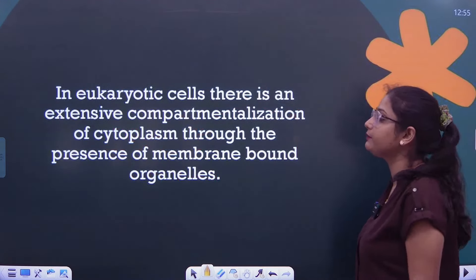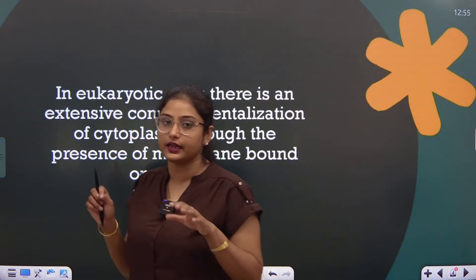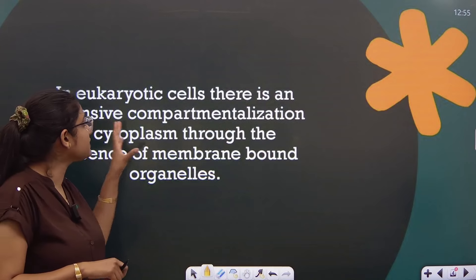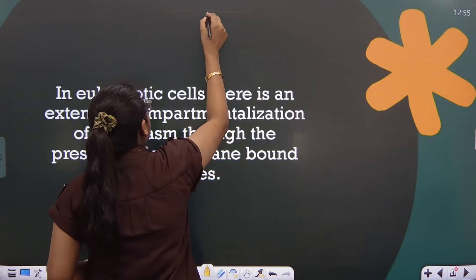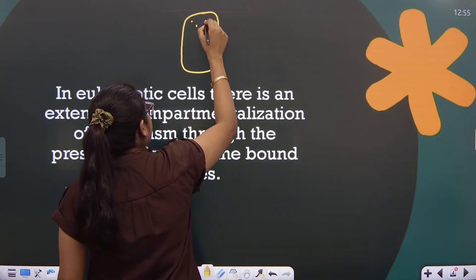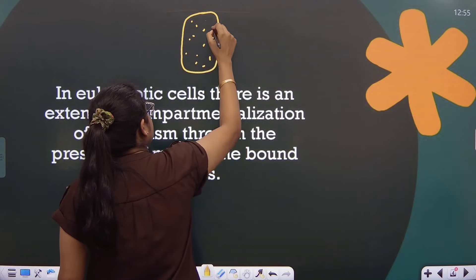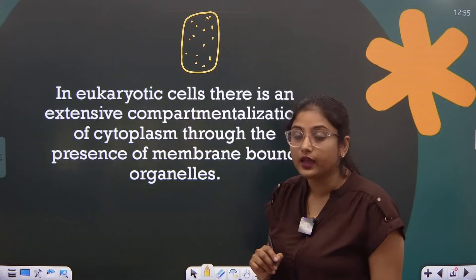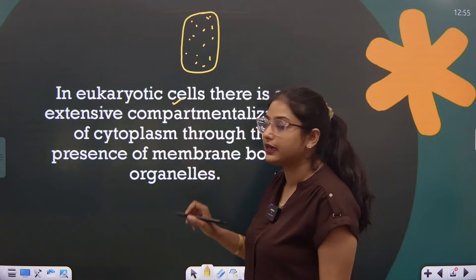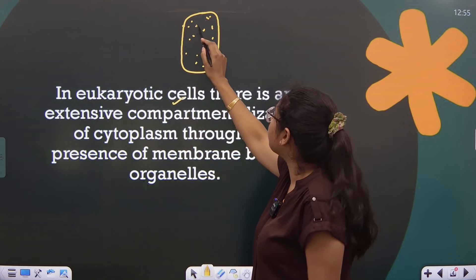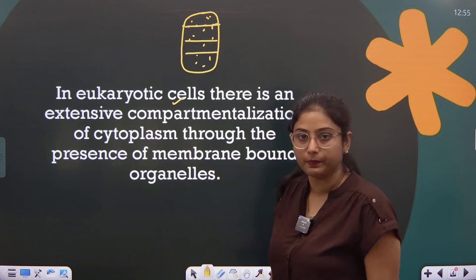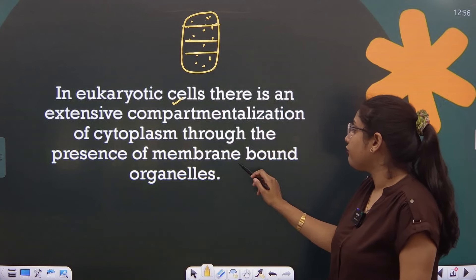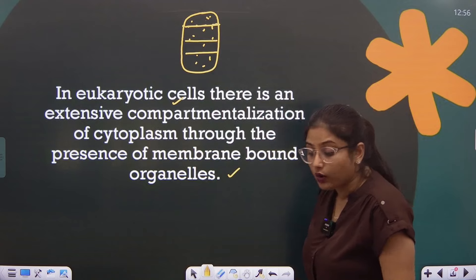Coming back to the slide: in eukaryotic cells, there is extensive compartmentalization of cytoplasm. In each cell there is a jelly-like fluid — an empty space where there are basic cellular activities. In eukaryotic cells, there is proper compartmentalization through the presence of membrane-bound organelles, because there were no membrane-bound organelles in the prokaryotic cell.